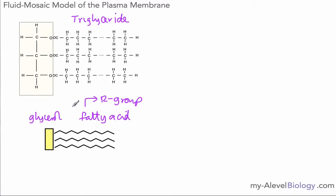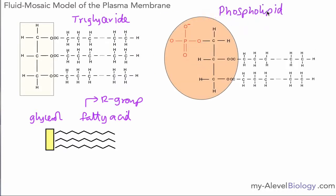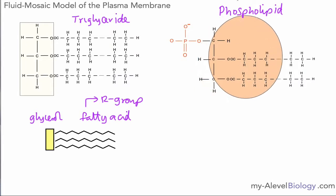This is linked to a very special molecule found in our cell surface membrane, or plasma membrane, and that molecule is called a phospholipid. The phospholipid molecule has a similar structure to our triglyceride, except that instead of three fatty acid chains we only have two, and one of the fatty acid chains is replaced by a phosphate group — shown here in orange.